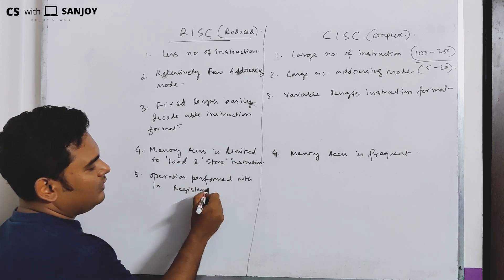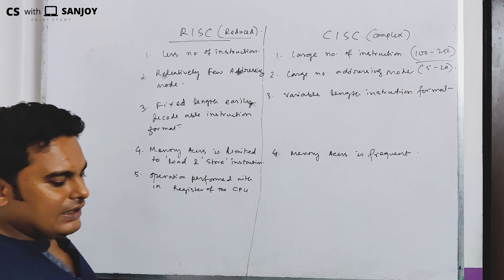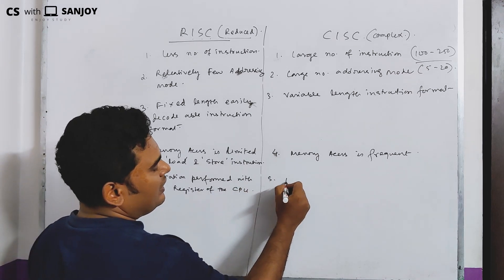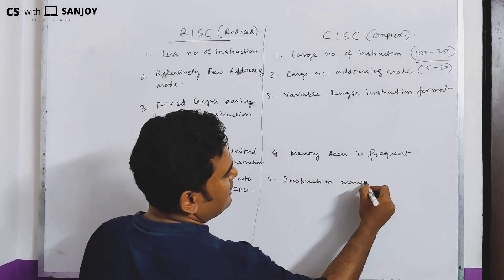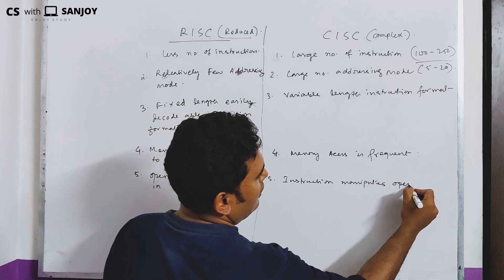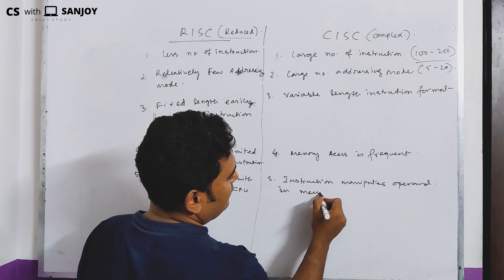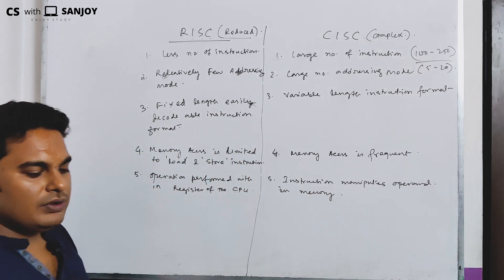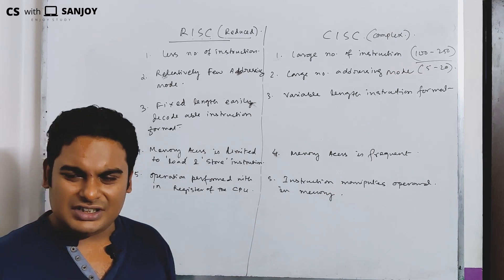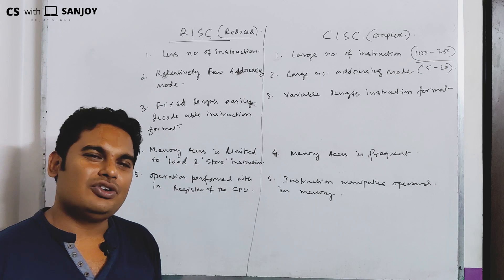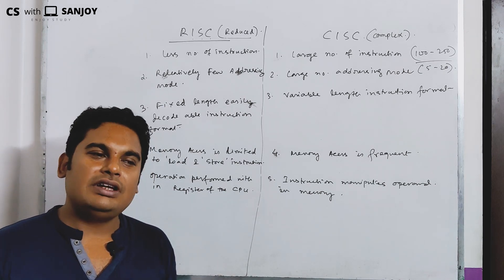The operand is performed using registers of the CPU. In CISC, the instruction manipulates the operand in memory — memory manipulation — because there is a large variety of instructions. Registers used for a doctorate name go to memory operations, memory system, memory access system. So you can use it very easily.